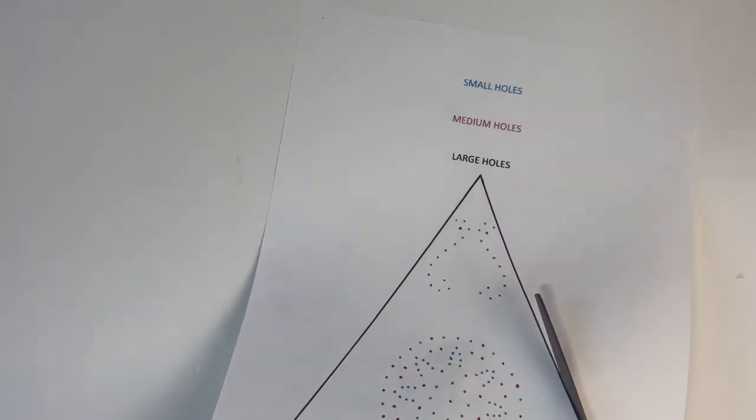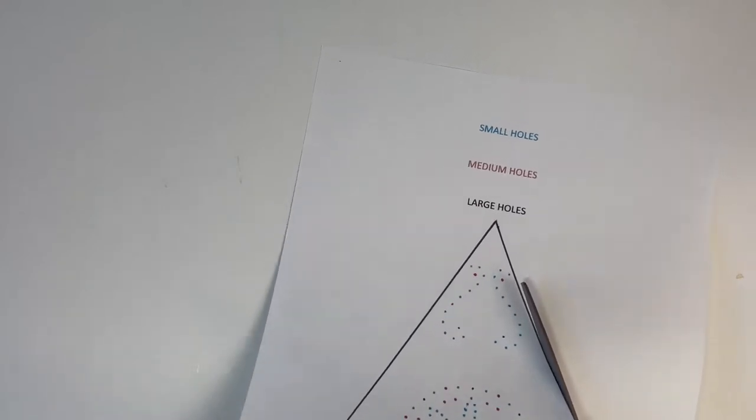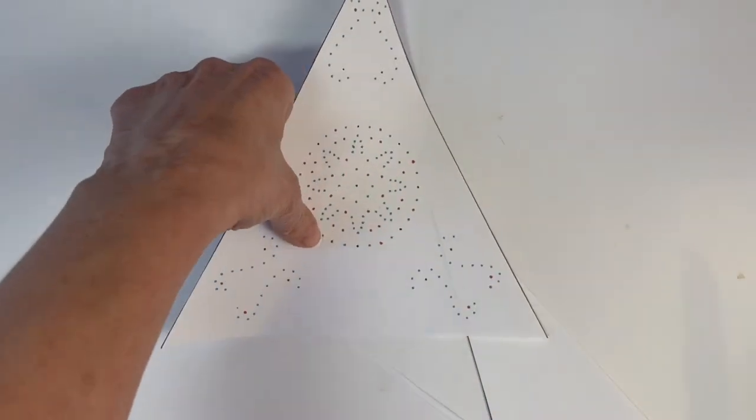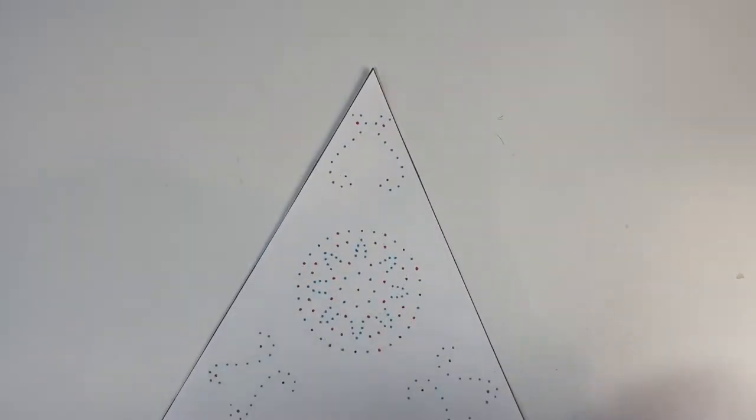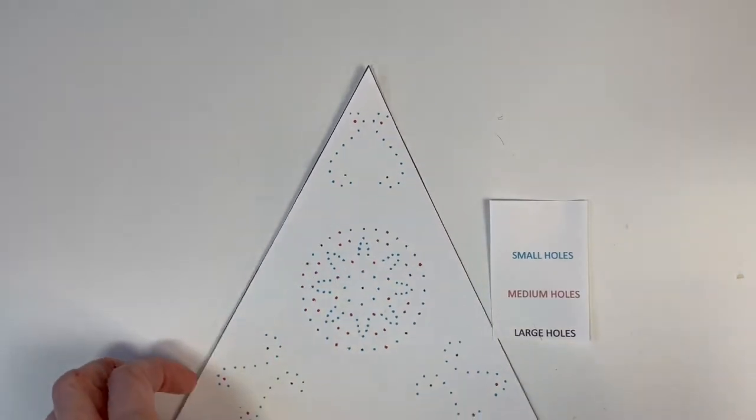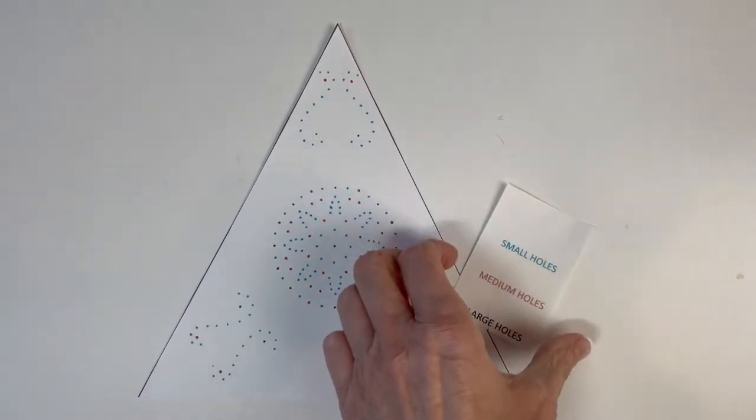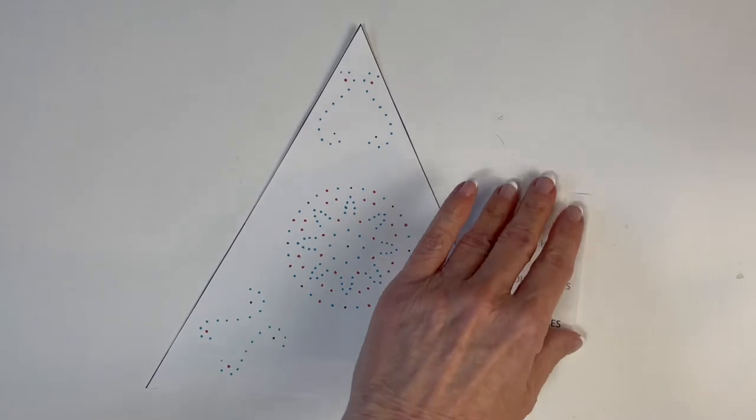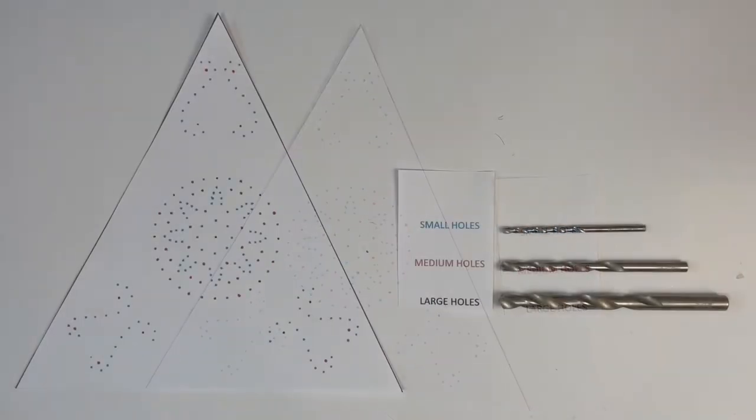Here I'm cutting out the pattern so I can attach it to the back portion of the frame. I'll just be using regular clear tape. I color-coded my pattern to make it a little bit easier to drill out. Small holes are blue, medium holes are red, and large holes are black.